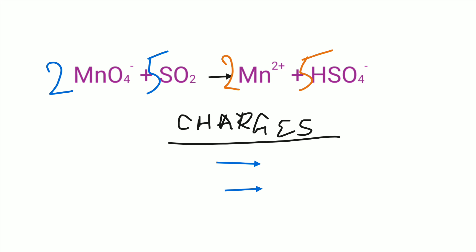Now we check the charges. On the left-hand side, permanganate ion has 2 times minus 1, giving minus 2 negative charges. Sulfur dioxide is a neutral compound, so no charge. On the right-hand side, manganese ion 2 times plus 2 gives plus 4. Bisulfate ion 5 times minus 1 gives minus 5. Simplifying the right-hand side gives minus 1.